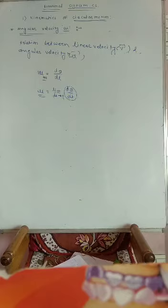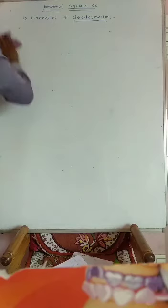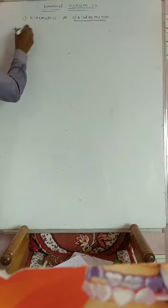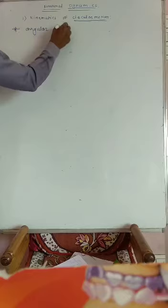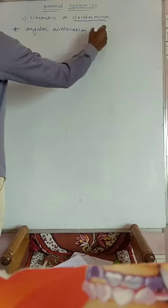The next physical quantity involved in kinematics of circular motion is angular acceleration. It is represented by alpha.